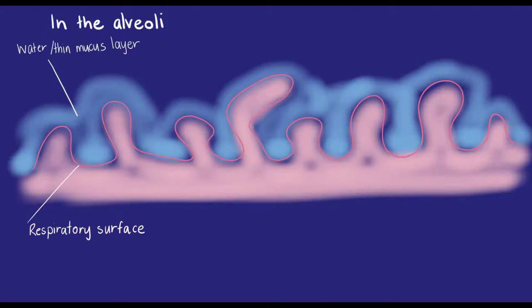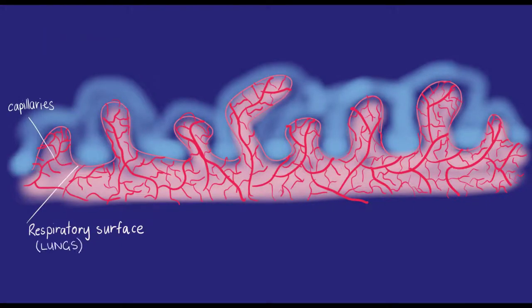When oxygen reaches the alveoli, it dissolves into the fluid there. The alveoli are laced with thin capillaries with low oxygen, high carbon dioxide blood, pumped straight from the heart.